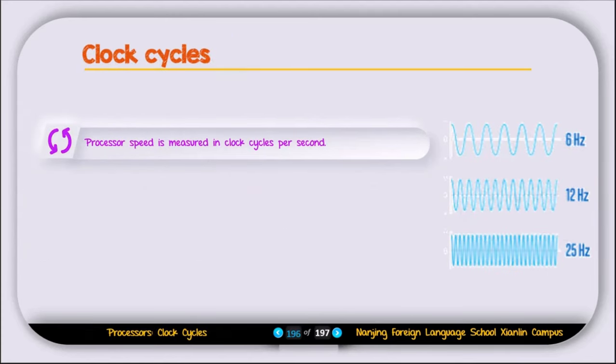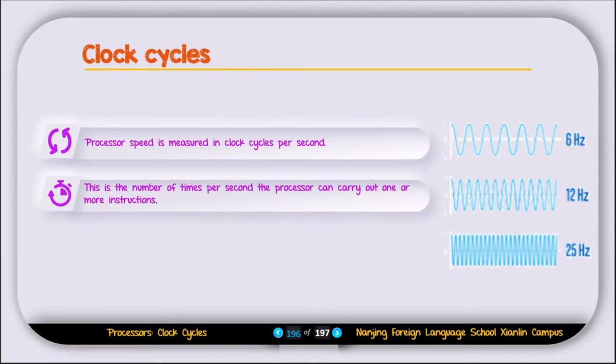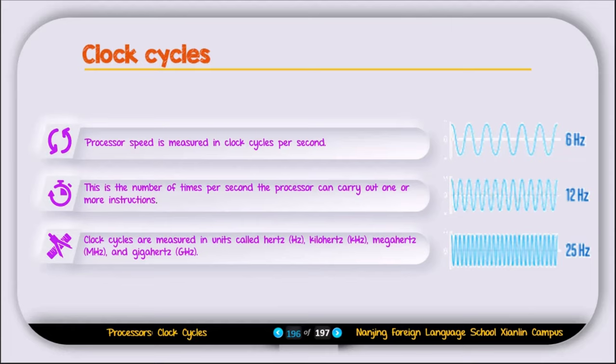Now let's see what is a clock cycle. Processor speed is measured in clock cycles per second. This is the number of times per second the processor can carry out one or more instructions. Clock cycles are measured in units called hertz, kilohertz, megahertz, and gigahertz.